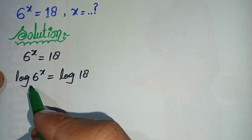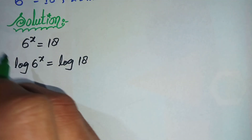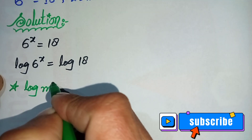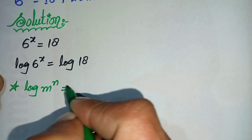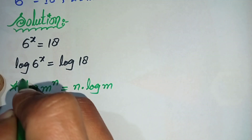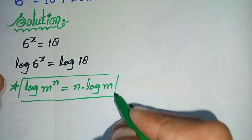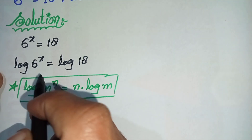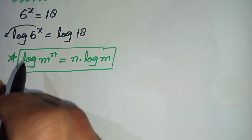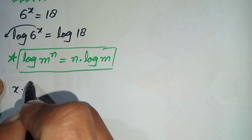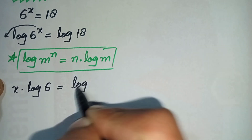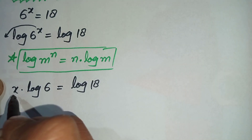In the left hand side we will use a famous log property: log of m raised to power n can also be written as n times log of m. By using this log property, we shift the power to the front, so this equation will become x times log of 6 is equal to log of 18.